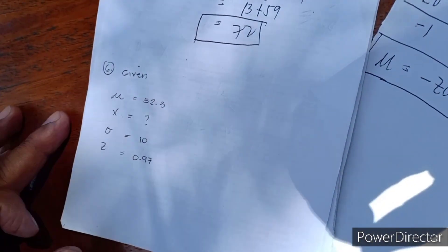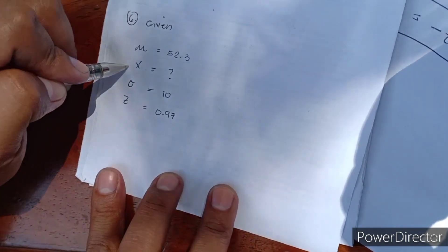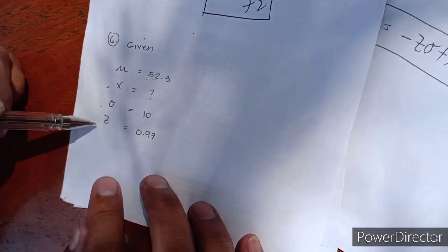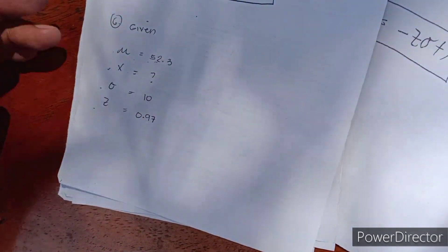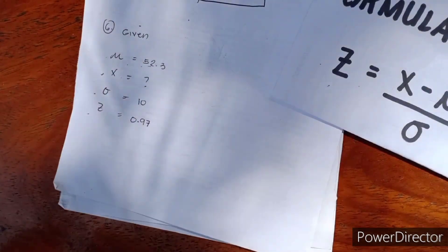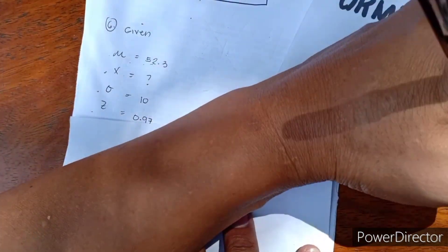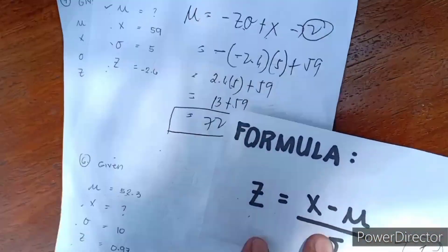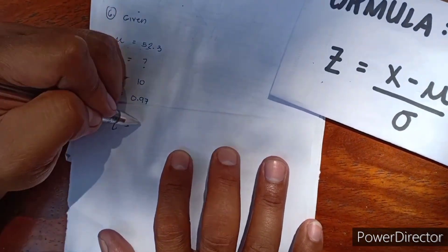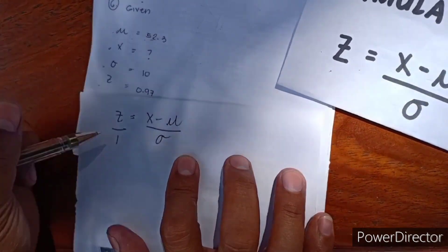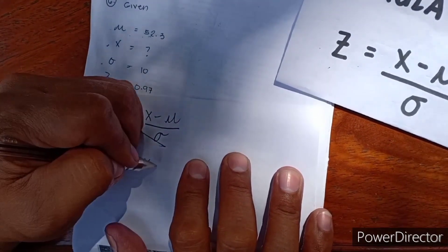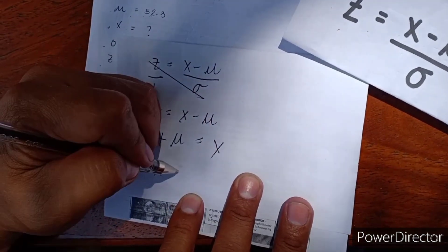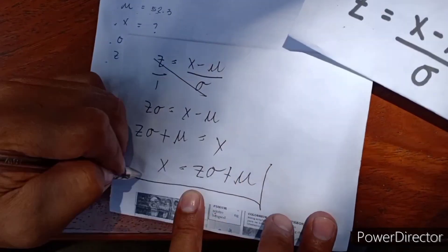Example number six: this time, what is missing is our X — the raw score. Mean is 52.3, standard deviation is 10, and Z is 0.97. We need to derive the formula for X. Starting from Z equals X minus mean over standard deviation, we cross multiply: Z times standard deviation equals X minus mean. Transposing, X equals Z times standard deviation plus mean. This is our formula number 3.